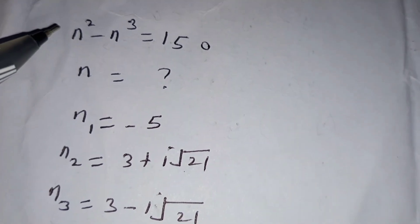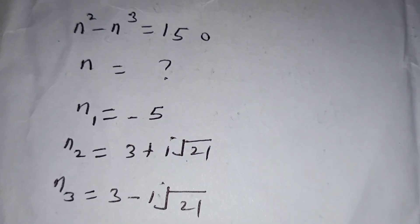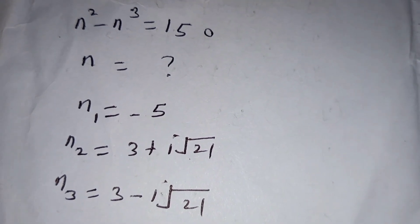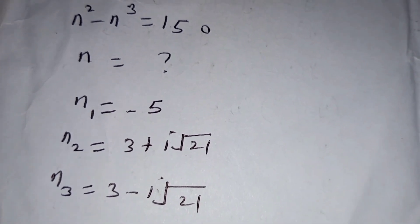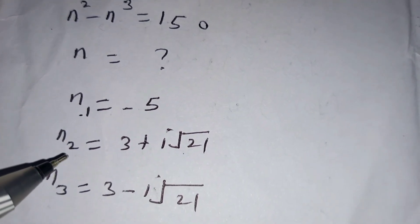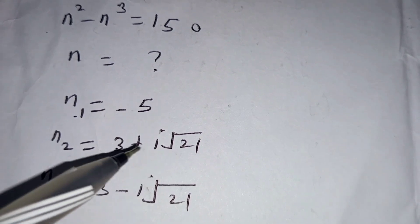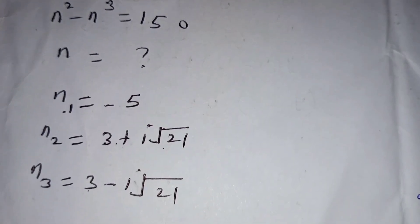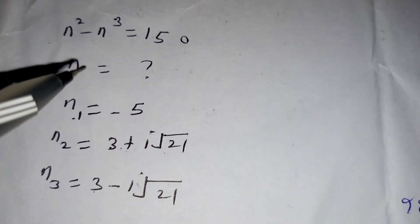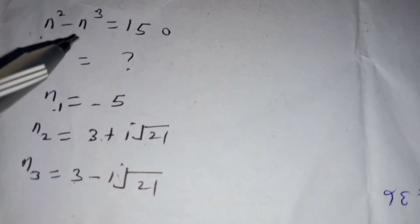So the question which you were given was n squared minus n cubed is equal to 1 fifth, and you are required to obtain the value of n. You obtain that one value of n is n1 equals negative 5. The other two values are complex: n2 is 3 plus i square root of 21, and n3 is 3 minus i square root of 21. Those are the possible solutions of n when you have negative n cubed plus n squared is equal to 1 fifth.